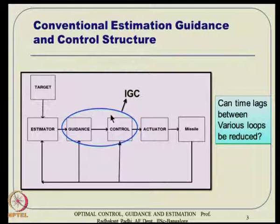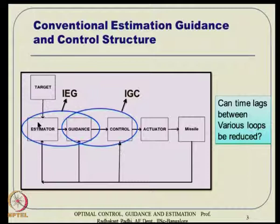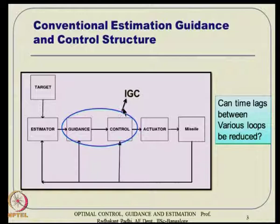Some people also think about combining the estimator and guidance, since guidance talks about target information all the time — why talk about estimation and guidance separately? That leads to integrated estimation and guidance. Some people combine all three, leading to the IEGC concept. Today we will talk about integrated guidance and control, specifically a method we have proposed called partial integrated guidance and control.